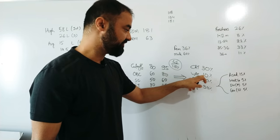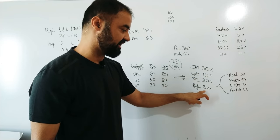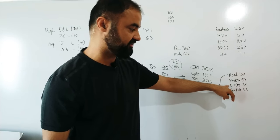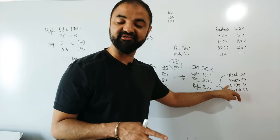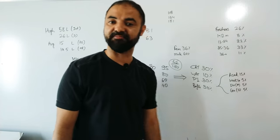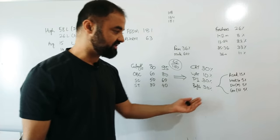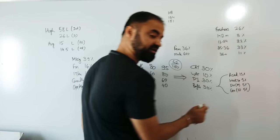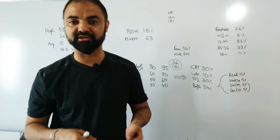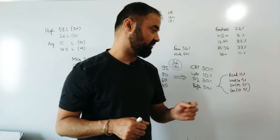After interview, final shortlisting criteria will be: 30% CAT weightage, 10% PI, and 30% profile. Profile means academic record 15%, work experience 5%, diversity - academic diversity for non-engineers 5% extra marks, and gender diversity for females 5% extra marks. So if you are a female non-engineer, you're getting 10% advantage.